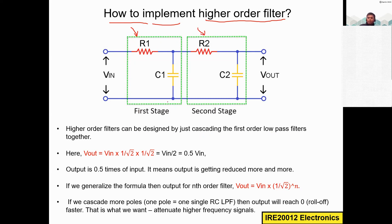When cascaded, it becomes a second order filter. This is called the first stage or first pole, and this is called the second pole or second stage. For a third order filter, you add one more RC stage — one more resistor and one more capacitor in parallel.